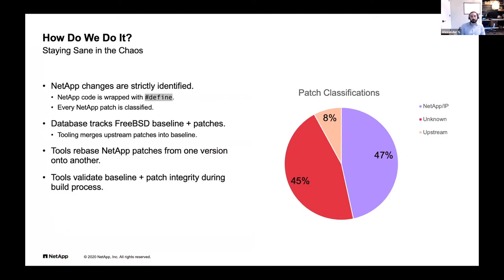How do we stay sane with all these modifications and changes to FreeBSD within ONTAP? We strictly identify every single patch that we make — wrapping it in a pound define — and also classifying those patches to determine whether it's proprietary to NetApp, if it can be upstreamed, if it's a customization of some SVN that needs to be brought back in, etc. This is a rough breakdown of those classifications. I personally believe that the 47% classified as NetApp IP is a little high. That's education work within the ONTAP engineering group to figure out what is our core value-add, what's our secret sauce we don't want to give away, and what can be given out to reduce our overhead.